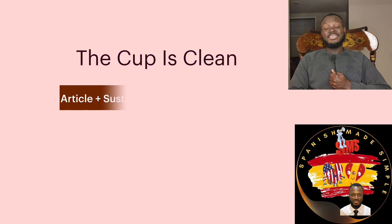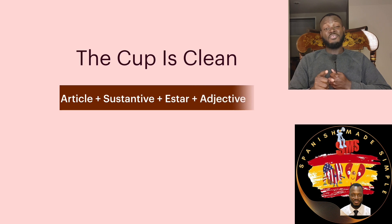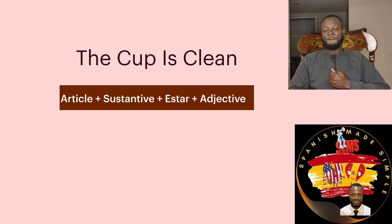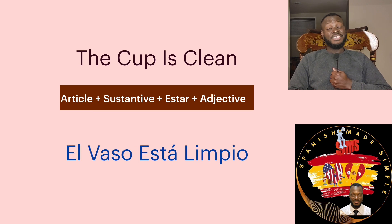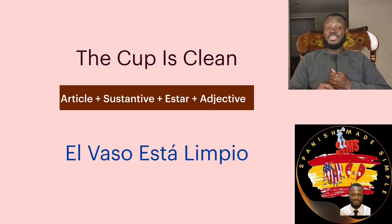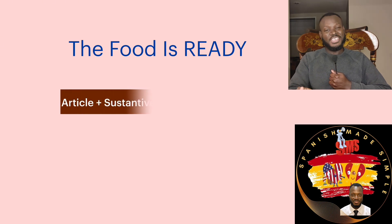'The cup is clean.' 'Cup' is 'vaso,' 'clean' is 'limpio.' The answer: 'El vaso está limpio.' That's correct, because it is clean now. But when I put some coffee or tea in it, it's no longer clean — and it's not going to stay unclean either. When I clean it again and put it in the dishwasher, it's going to be clean again.